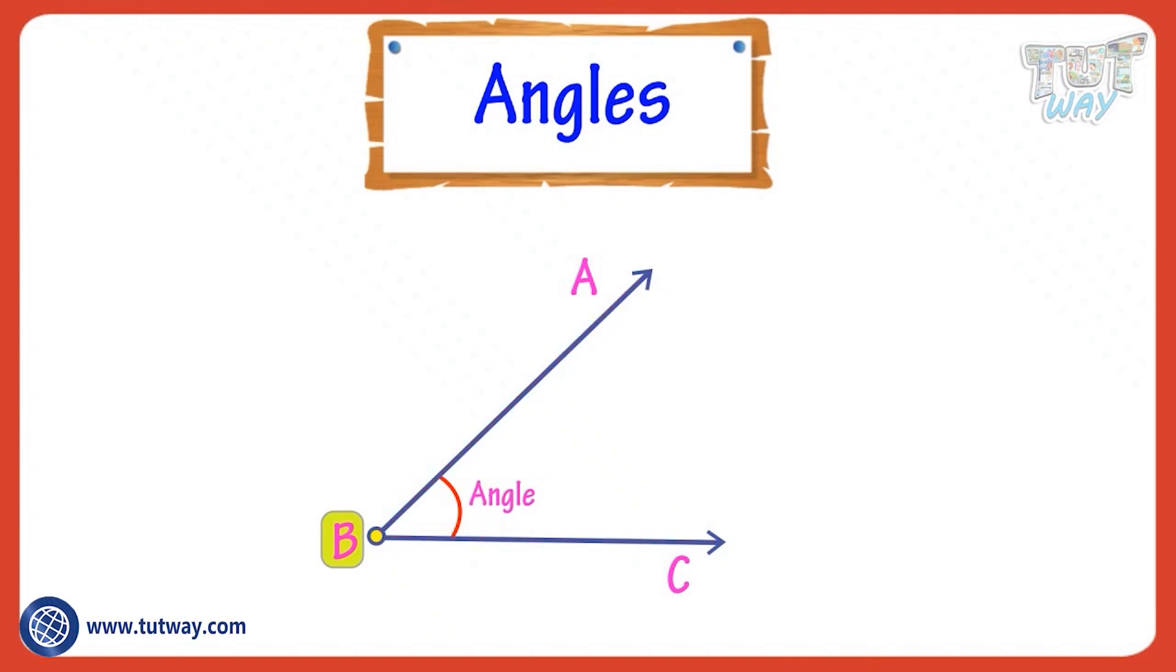So kids, angle is a shape formed by two straight lines diverging from a common point. Here B is the vertex of the angle.